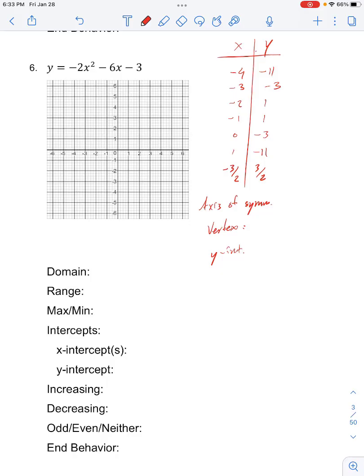Number 6 in your classwork for quadratic functions asks you to find the axis of symmetry, the vertex, and y-intercepts, and then analyze the other aspects. So here we have y equals negative 2x squared minus 6x minus 3. I went ahead and made a table of x values, so I went from negative 4 going up by integers to 1, so we can graph this.